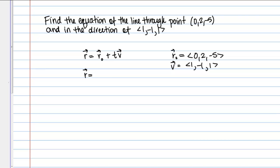it's going to look like this: vector R = <0,2,-5> plus T, here T is a scalar quantity, T times the vector V.